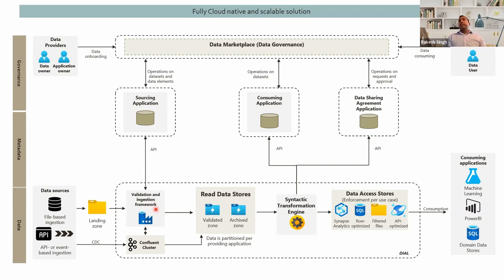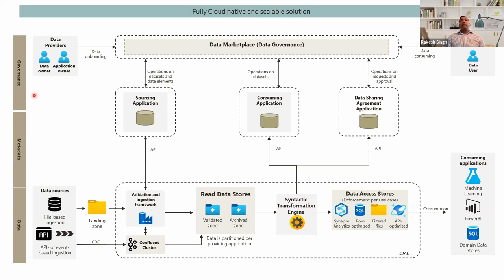If you look at the data platform, this is a simplified version of our cloud-native and scalable solution — the high-level architecture. I've removed other parts related to metadata and other aspects; we're just focusing more on the data platform. Here, if you look at it, we have three layers: a governance layer, a metadata layer, and a data layer. All three layers are very important if you want to have a good and successful data platform.